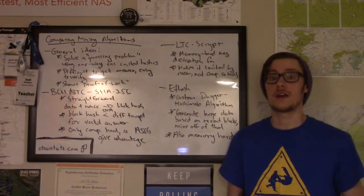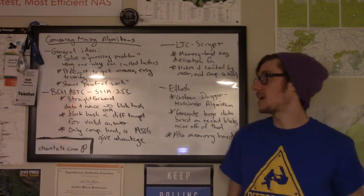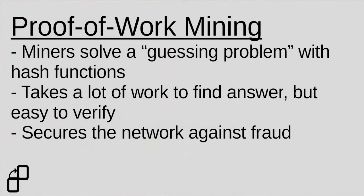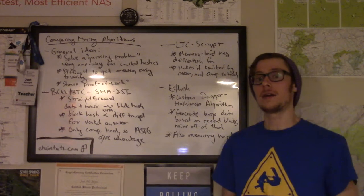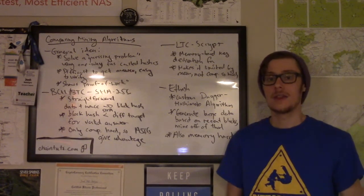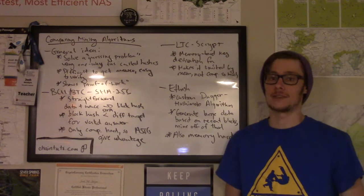What the nodes have to do is they have to do a bunch of guesses using their computing power and their resources and try to find an answer to that problem. Now, this problem is really difficult to find an answer to, but it's super easy for anyone else on the network to verify once an answer is found. All of these legitimate nodes on the network are trying to solve this problem and contributing a bunch of resources. So for somebody to pull off a fraud, like an illegitimate transaction included in a block, they would have to out-compute the rest of the network that's acting honestly, and it becomes really difficult to do at scale.